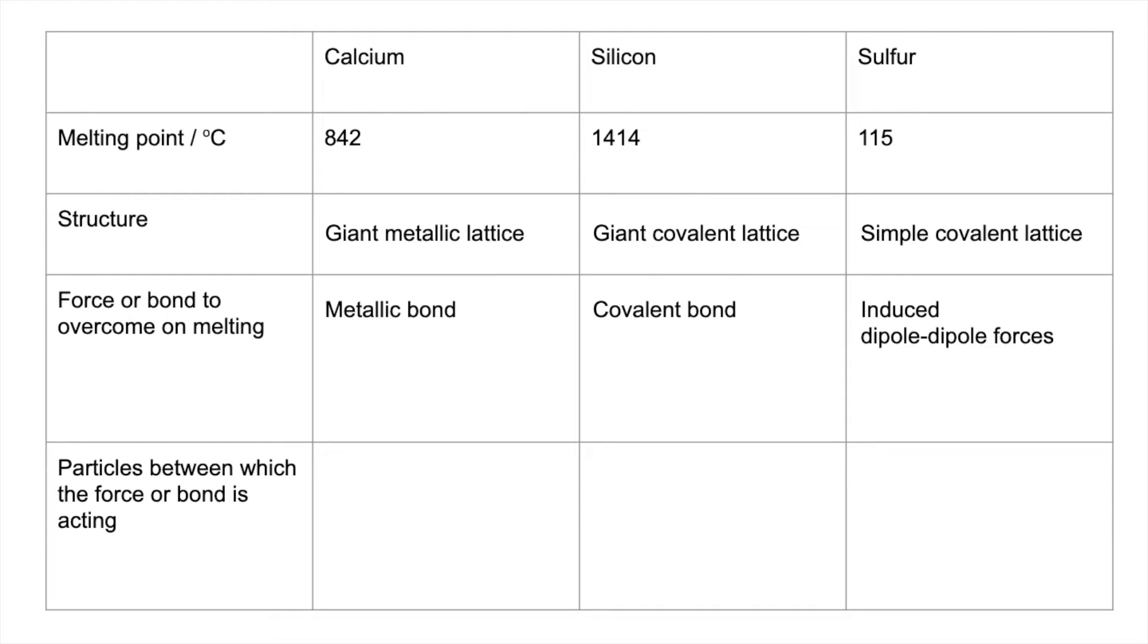So the particles between which the force or bond is acting. For calcium, it's the calcium cations or Ca2+ ions and delocalized electrons. In the case of silicon, it's silicon atoms. And in the case of sulfur, it's S8 molecules.